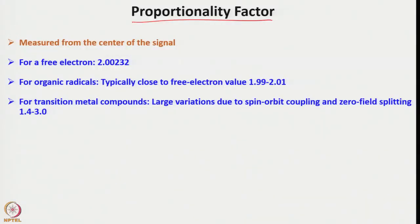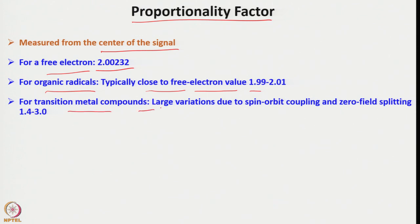The proportionality constant G is measured from the center of the signal. For a free electron G equals 2.00232; for organic radicals it is typically close to the free electron value, between 1.99 and 2.01. For transition metal compounds, large variations due to spin-orbit coupling and zero-field splitting are observed, with G ranging from 1.4 to 3.0.